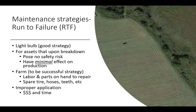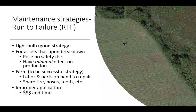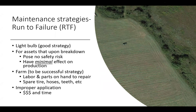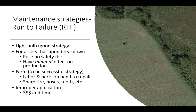The run-to-failure strategy is good for something like a light bulb — it doesn't pose an immediate safety risk and has minimal effect on production. For this strategy to be successful, you really need to have labor and parts on hand to repair quickly — a spare hose, tire, teeth, whatever it may be. Improper application of this strategy is going to cost you money and time. The picture here is like one of our tractors that broke down out in the field — kind of a Google Earth level view of the situation.